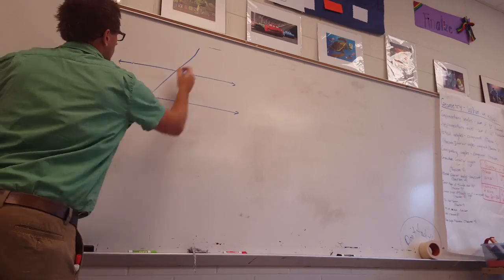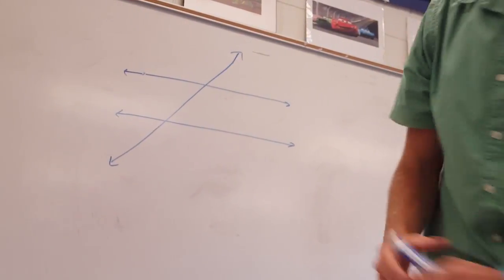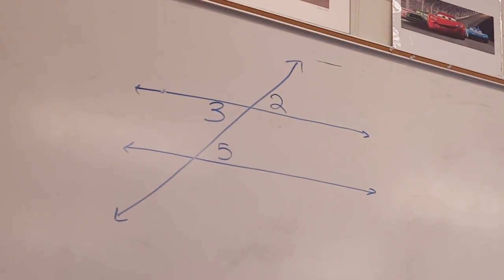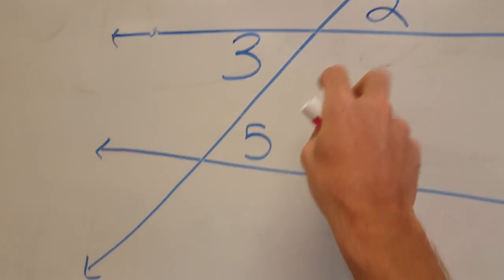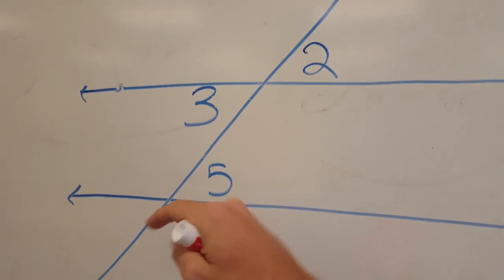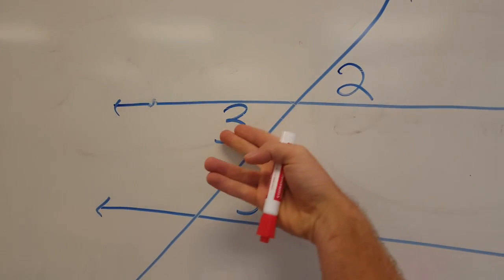Take a look at this picture of lines where alternate interior angles are 3 and 5. Angle 3 is inside all tangled, but he's the same as 2 because they're vertical angles.